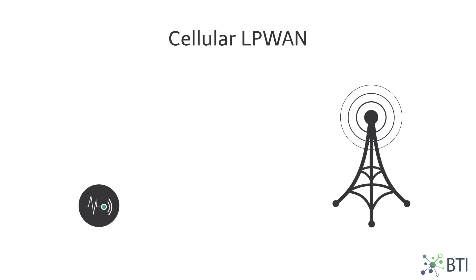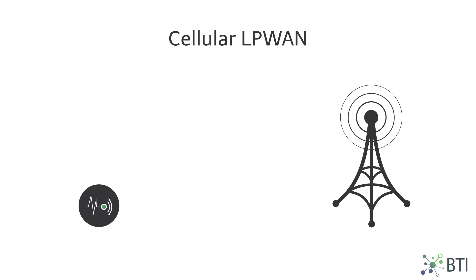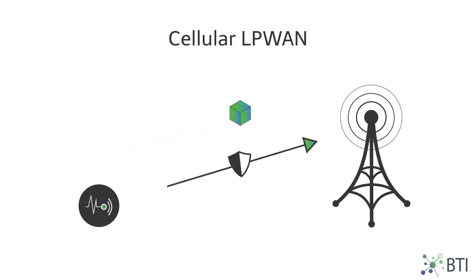1. Cellular LPWANs. This technology uses the licensed spectrum and existing cellular infrastructure for data transmission. Since there is little co-channel interference, this ensures reliable data transmission.